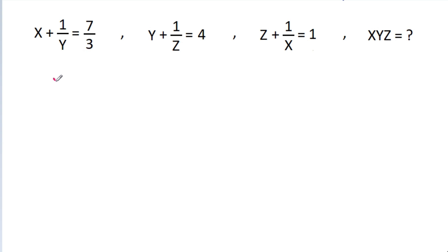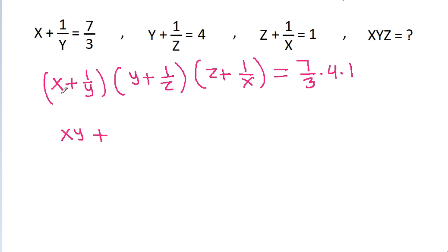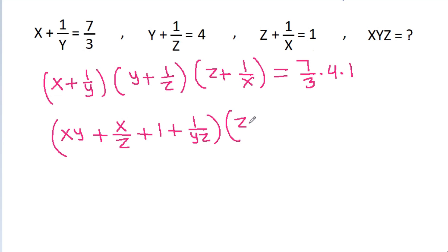So, if we multiply (x + 1/y), (y + 1/z), and (z + 1/x) together, then it will be equal to 7/3 times 4 times 1.